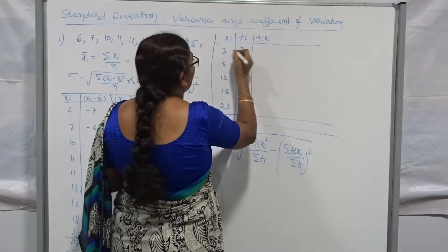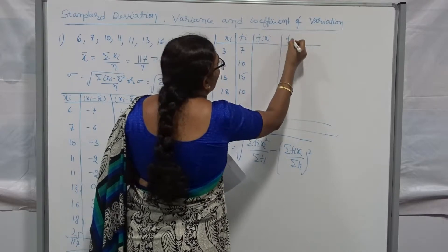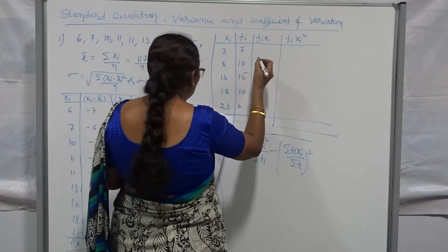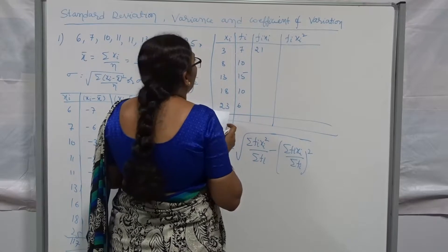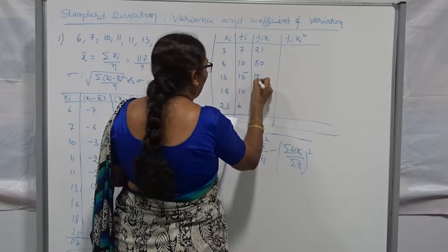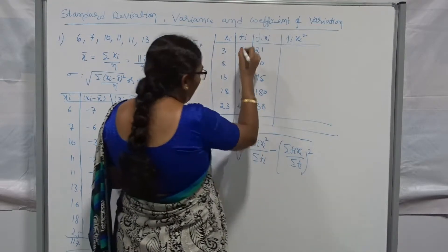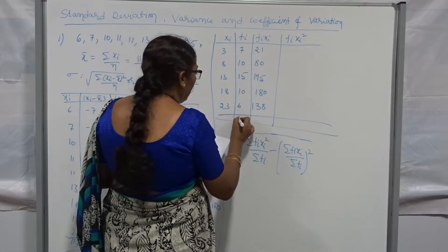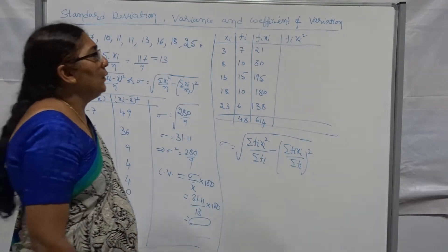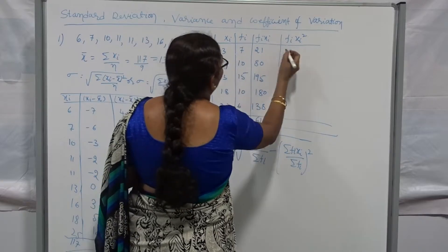Now what is fi·xi? I require fi·xi and also fi·xi squared. 3 into 7 is 21. 8 into 10 is 80. 13 into 15 gives 195. 18 into 10 is 180. 23 into 6 is 138. The total of sigma fi is 48. The total of fi·xi is 614. Now I want to find fi·xi squared.